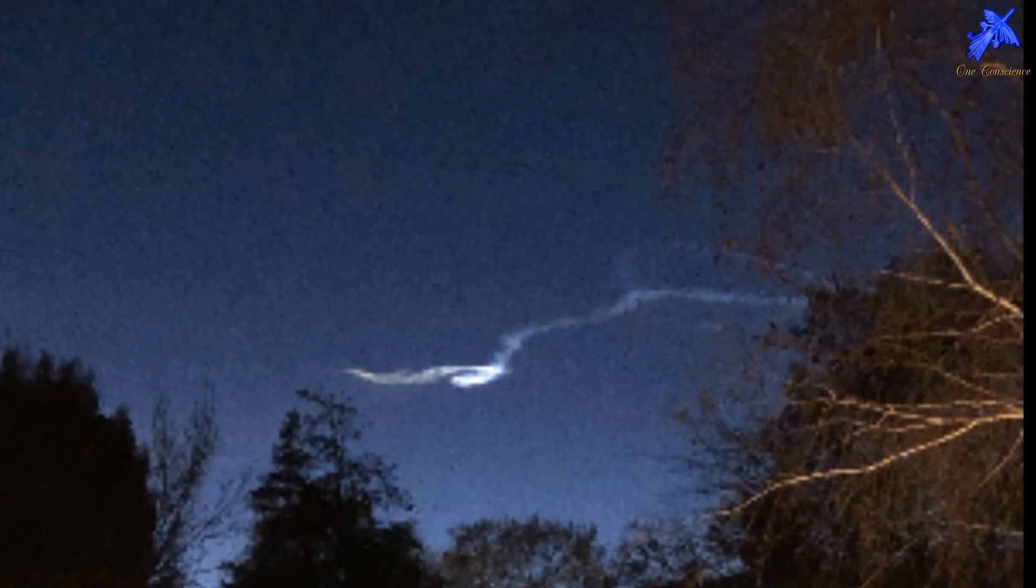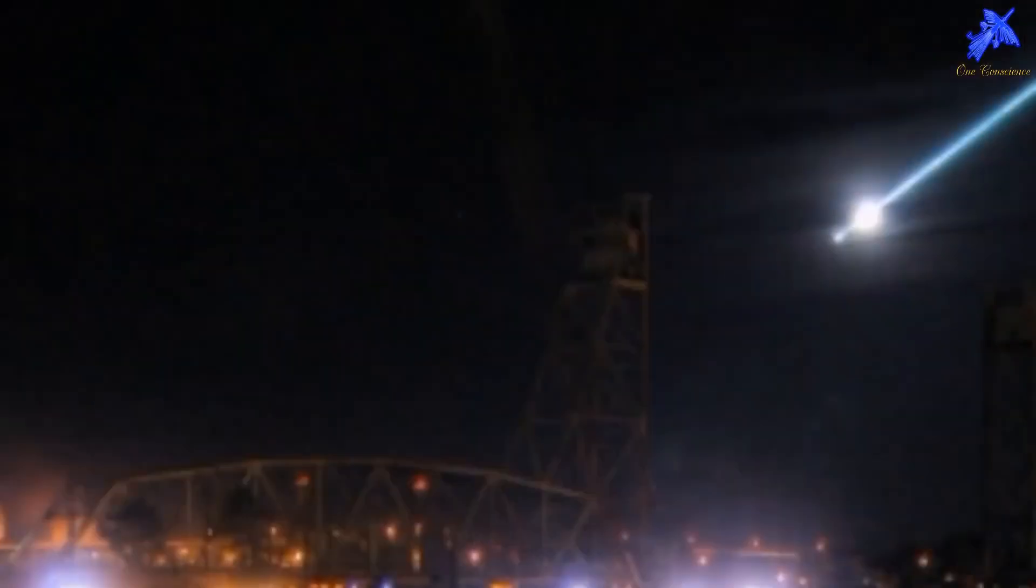Okay, meteor showers are usually named for the constellation in which their radiant lies at the time the shower occurs. The Perseid meteor shower peaks about August 12 every year. It will appear to radiate from the constellation Perseus, while the Leonid meteor shower occurs in November. The meteor showers reoccur each year. In some cases they have been recognized for hundreds of years.